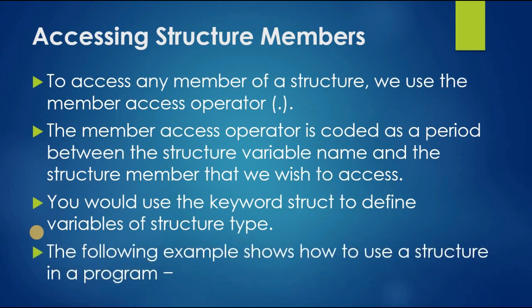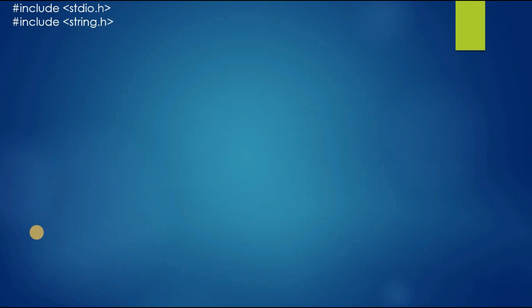The following example shows how to use a structure in a program. First we declared two preprocessor commands: stdio.h and string.h. Then we defined our struct. Struct books is the name. Then inside we have three character arrays and an integer variable book_id. After closing the curly bracket we gave a semicolon.